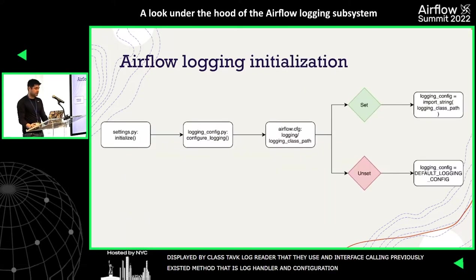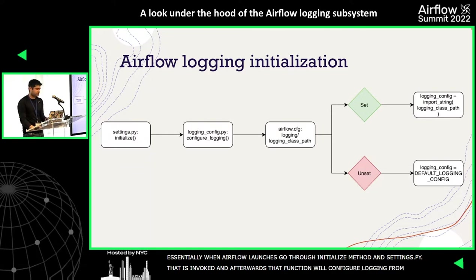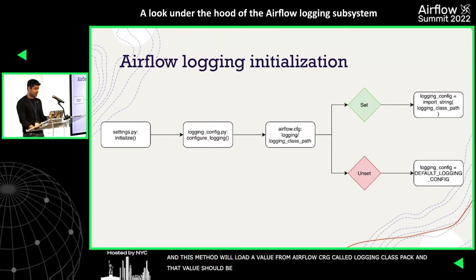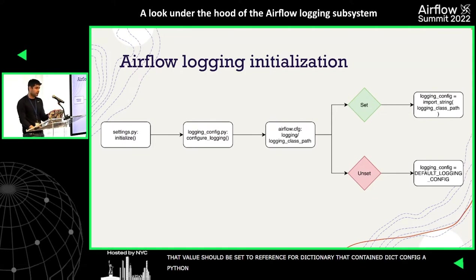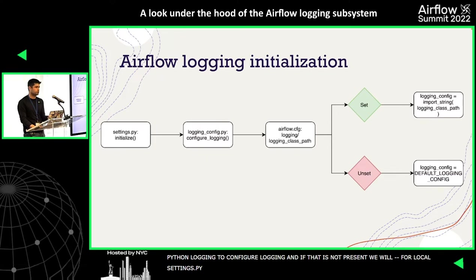How is the configuration initialized? Essentially, when Airflow launches, we go through the initialize method defined in settings.py, and that function calls configure_logging from the logging config module. What this method does is load a value from Airflow.cfg called logging_class_path. That value should be set to a reference to a dictionary containing the dict_config, which is a configuration concept for the Python logging module. That dict will be loaded and passed to Python logging to configure logging. If that key is not present, we'll use the default logging config defined in the template for local_settings.py — that's what defines the logging configuration we're used to when we first install Airflow.